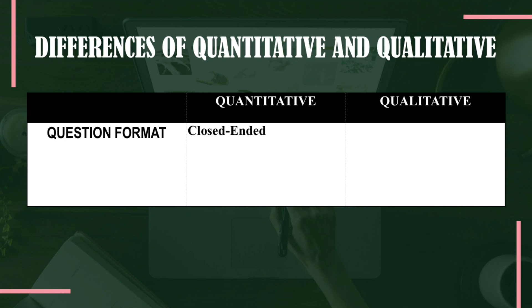Moving on to question format: quantitative research requires close-ended statements or questions. On the other hand, qualitative research needs open-ended questions — divergent questions that encourage in-depth sharing among participants based on the phenomenon being studied. Researchers are not allowed to ask 'why' questions; rather, they must formulate 'what' and 'how' questions. For example, instead of asking 'Why do young people attempt suicide?' you rephrase it as 'What are the reasons some young people attempt suicide?'